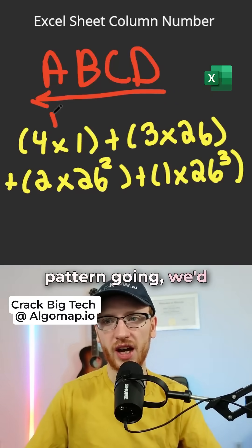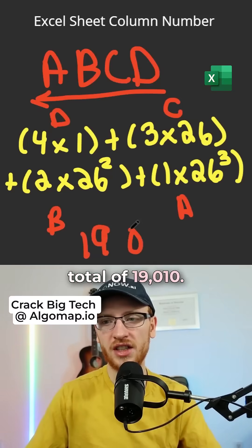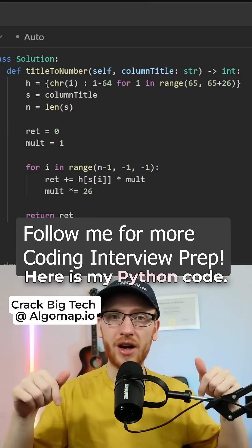So if we kept this pattern going, we'd have D plus C plus B plus A, which gives the grand total of 19,010. Here is my Python code.